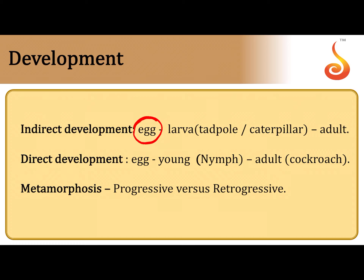Regarding development, once the egg hatches the organism cannot immediately become an adult, so there are intermediate stages. In indirect development, the young one that hatches out of the egg is called a larva — for example, a tadpole or a caterpillar. The larva undergoes drastic changes called metamorphosis to become an adult. A larva is distinct in appearance, physiology, anatomy, and morphology from the adult.